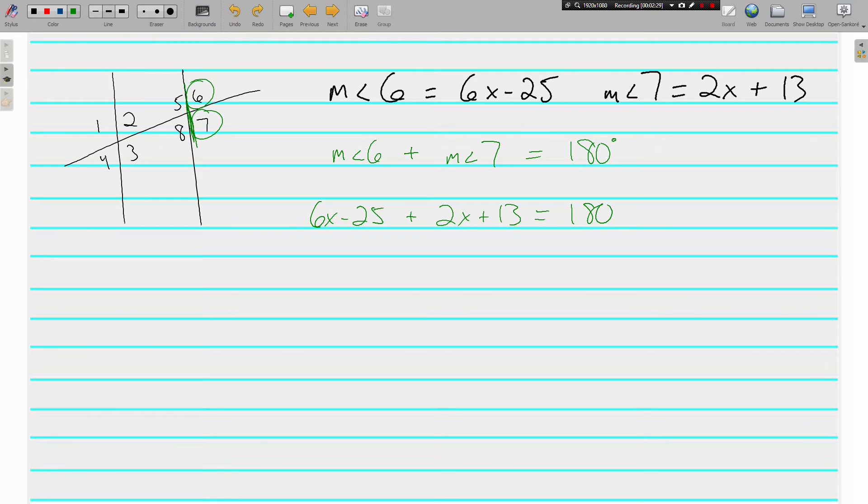Combine our like terms. We have 6x's and 2x's. That gives us 8x's. And we also have a negative 25 and a positive 13, which is negative 12. Save the term with the variable for last. Add 12 to both sides, and we get 8x is equal to 192. Divide both sides by 8, and we get x is equal to 24.